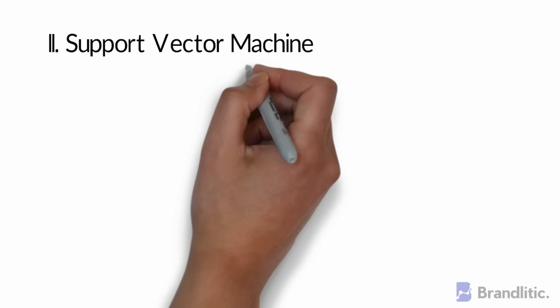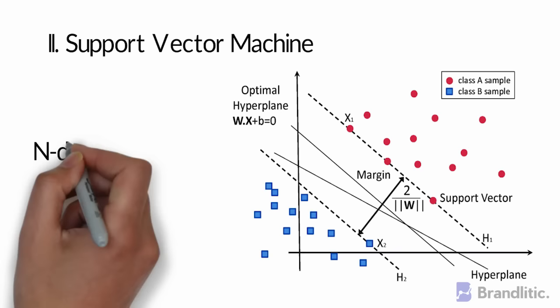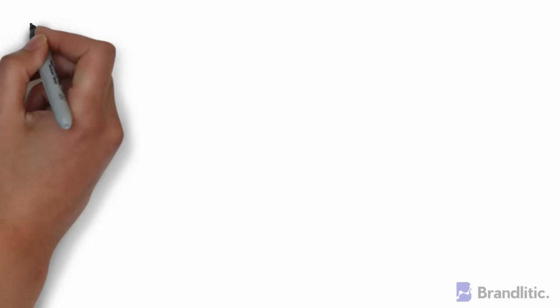Support Vector Machine is a supervised classification technique that carries an objective to find a hyperplane in n-dimensional space that can distinctly classify the data points.